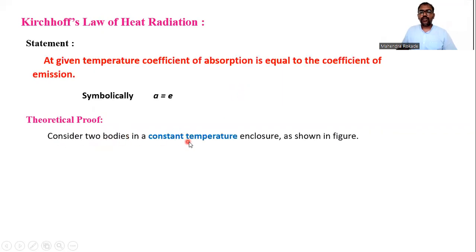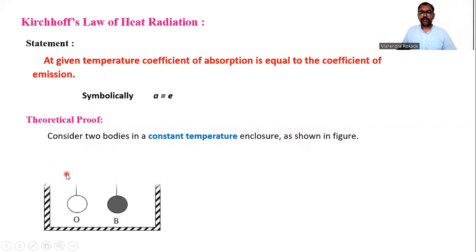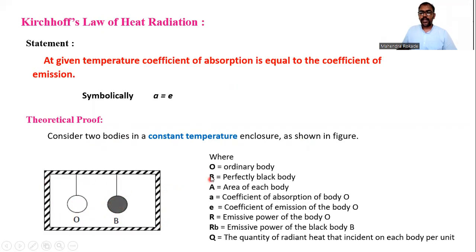For the proof, we consider two bodies enclosed in a constant temperature enclosure. Body O is an ordinary body and body B is a black body, both inside the constant temperature enclosure. We define the parameters: A is the area of each body, small a is the coefficient of absorption of body O, E is the coefficient of emission of body O, R is the emissive power of body O, R_B is the emissive power of the black body, and Q is the quantity of radiant heat energy incident on each body.